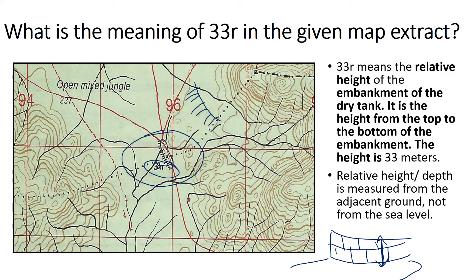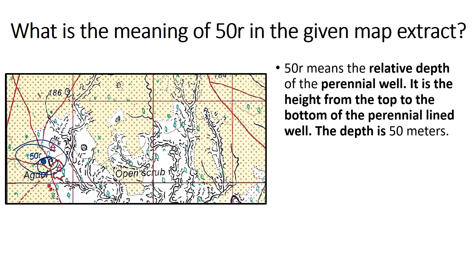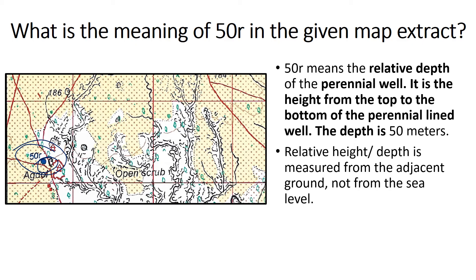What is the meaning of '50R' in the given map? Here '50R' is written in blue. When it is written in black it indicates height; when written in blue it indicates depth. We can see there is a perennial lined well, so '50R' means the relative depth of the perennial well. It is the depth from the top to the bottom of the perennial lined well — the depth is 50 meters. Relative height or depth is measured from the adjacent ground, not from the sea level.